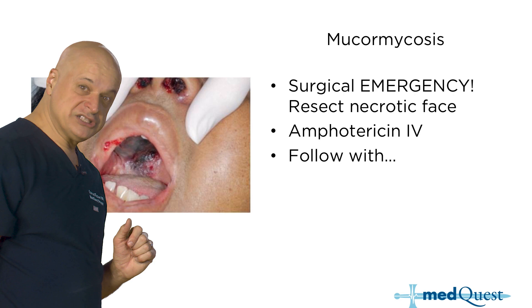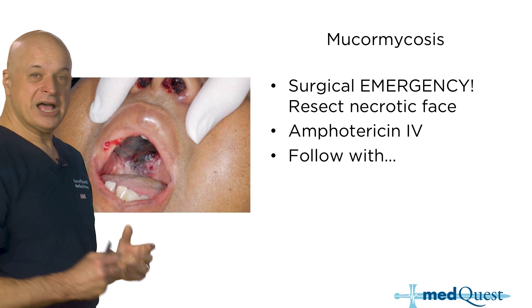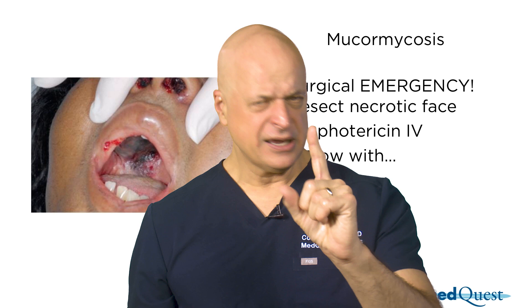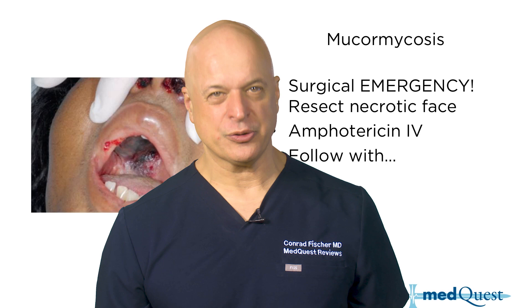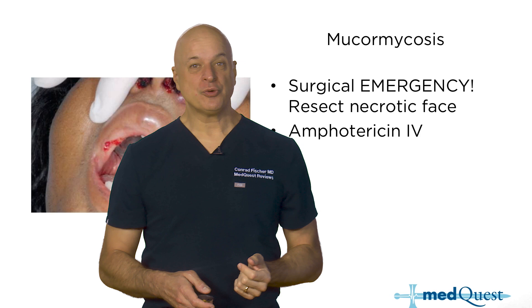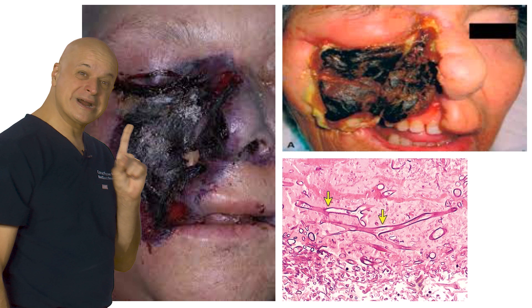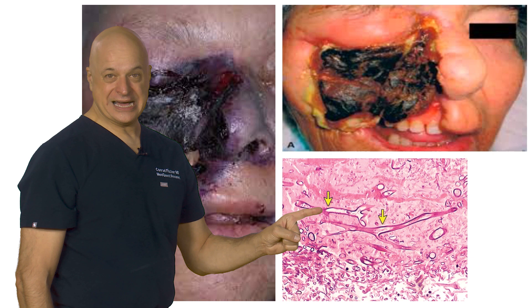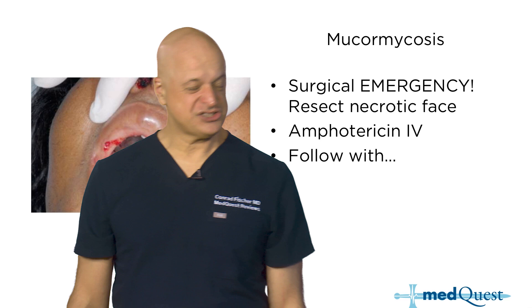We got him transferred to a specialized center with the equipment to operate on a sinus like that. The whole point of learning this is that you may be the only one to notice that an out-of-control diabetic has progressive eye pain and the eye is not moving well. Open the mouth — just a little black stuff on his palate. Recognize it before those wide, non-septate, right-angle-branching hyphae chew through the face in hours.